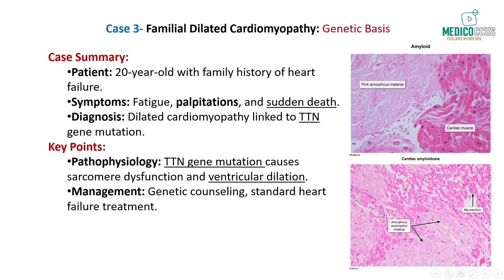Next, imagine a 20-year-old college student who suddenly dies in his sleep. In the weeks leading up to his death, he complained of fatigue, palpitations, and dyspnea with exertion. His family history reveals that his mother had heart failure and underwent a heart transplant at age 40. Genetic testing reveals a truncating mutation in the TTN gene, which encodes the sarcomere protein titin.